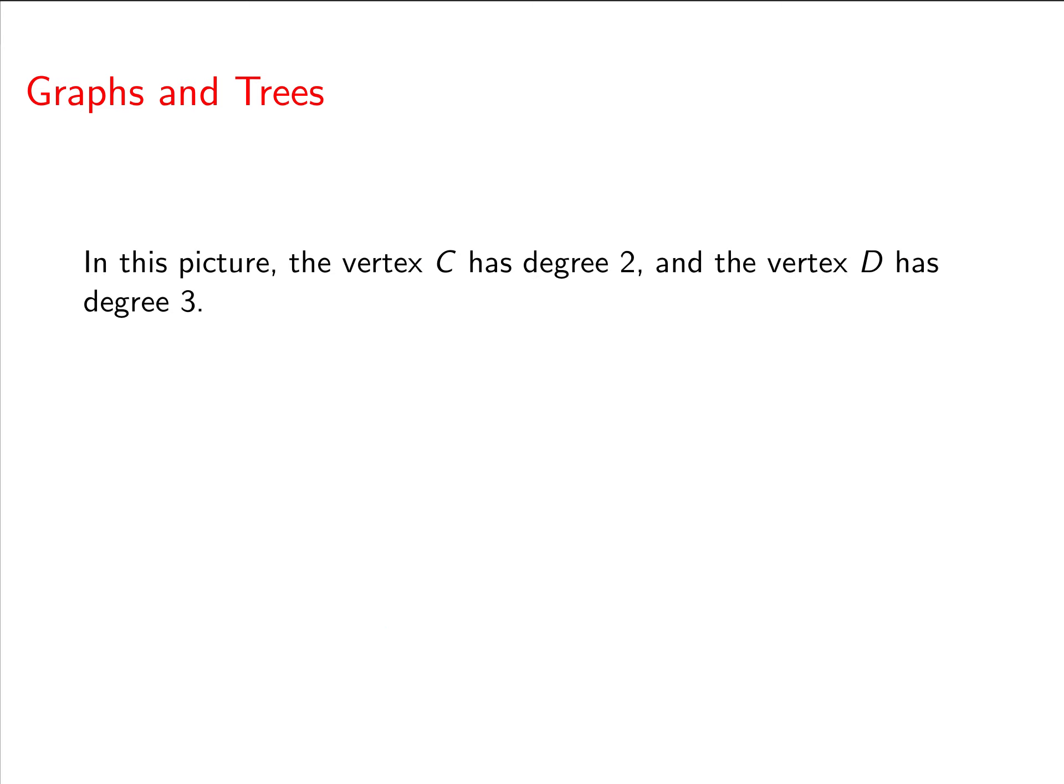So in this picture, vertex C has degree 2 and the vertex D has degree 3. So it's just a count of how many edges are coming out of each vertex.